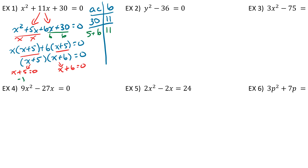Now to solve, we set both factors equal to 0: x plus 5 equals 0 and x plus 6 equals 0. For the first one, subtract 5 from both sides and we get x equals negative 5. For the second one, subtract 6 from both sides and we get x equals negative 6. So negative 5 and negative 6 are the two solutions to this first example.